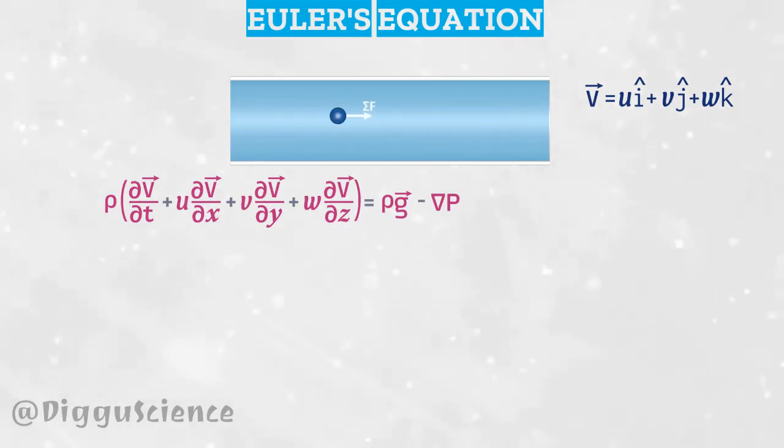The acceleration due to gravity g is also a vector quantity. In 3D Cartesian coordinates, the vector g can be written as g x i plus g y j plus g z k.